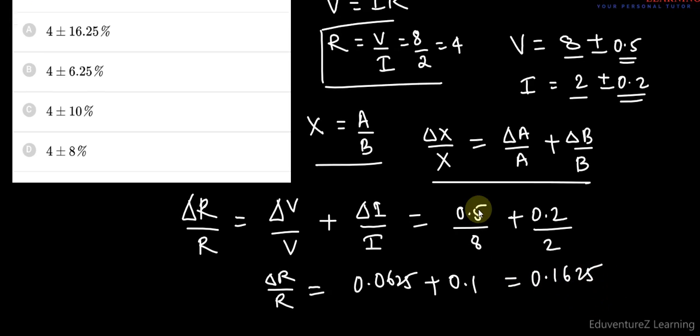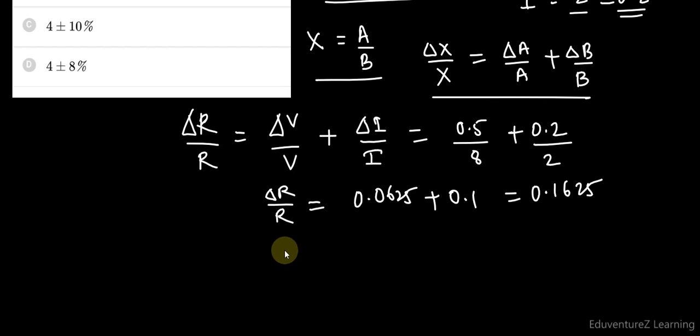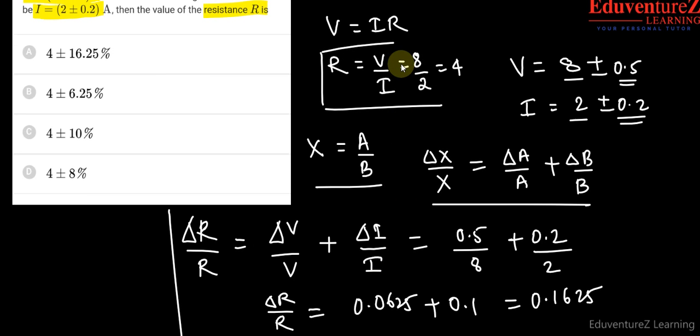So this is the relative error. If you want to convert to percentage, then multiply both sides by 100, so it will become 16.25 percentage. So our resistance is, this is the value of R here, 4 plus minus 16.25 percentage.